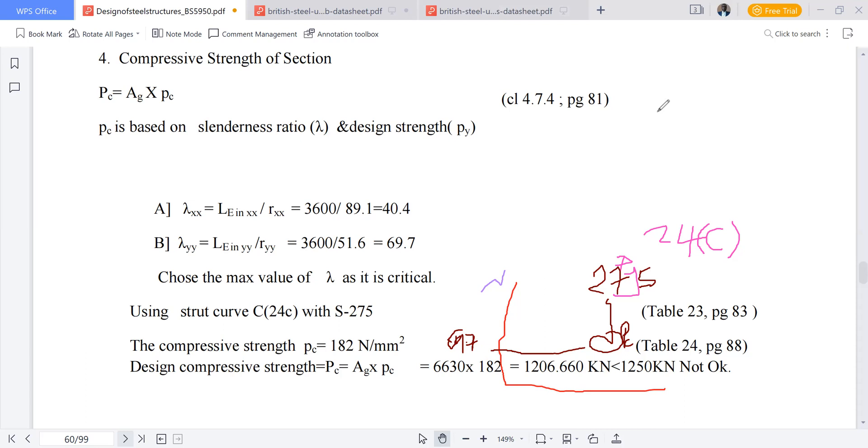You have to perform interpolation because most of them, you'll find that 69.7 is between some whole number interval, so you'll have to interpolate and find the value it corresponds to. Now, our compressive strength pc from Table 24c will be equivalent to 182 newtons per millimeter squared.